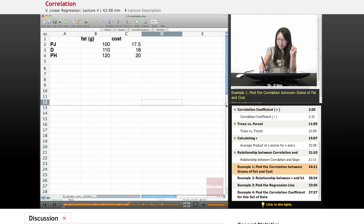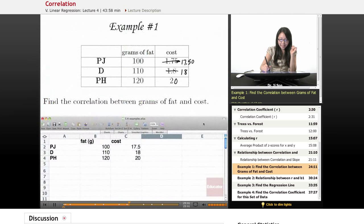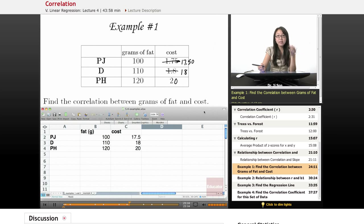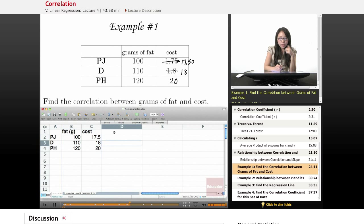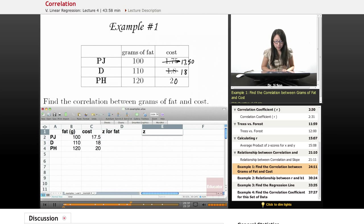If you look at the examples provided in the download below, we could use this data in order to find a correlation coefficient. In order to find the correlation coefficient, I like to break it down into the component pieces. The big component pieces I'm going to need are the Z-score for fat and the Z-score for cost.